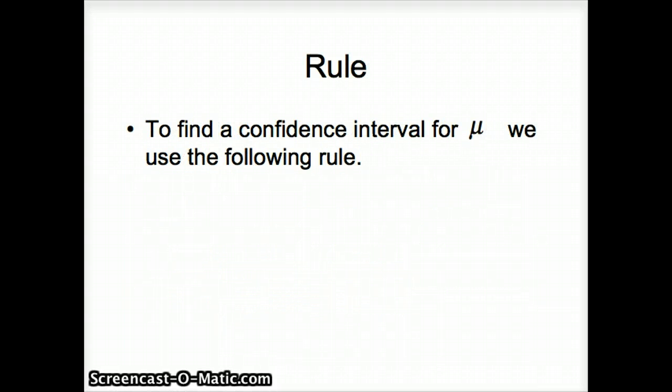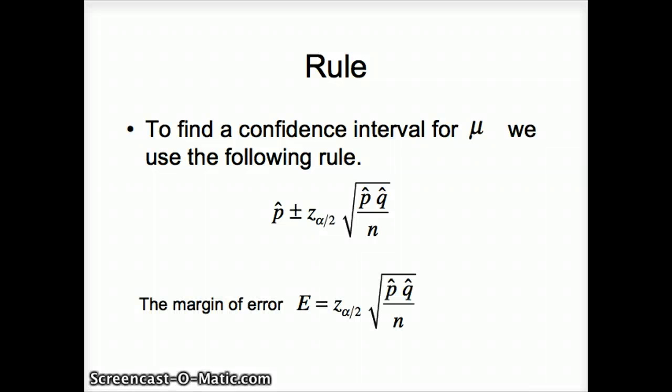So we're looking for a confidence interval. If that's the case we use the following rule: P hat plus or minus z alpha by 2 square root of P hat Q hat over n. The margin of error is this part, so in a sense our formula is P hat plus or minus E, or P hat plus or minus the margin of error.